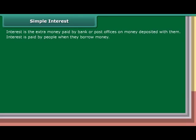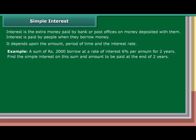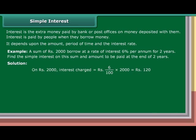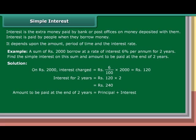Simple Interest: Interest is the extra money paid by banks or post offices on money deposited with them, and is also paid by people when they borrow money. It depends on the amount, period of time, and the interest rate. Example: A sum of Rs. 2,000 is borrowed at 6% per annum for 2 years. SI for 1 year = 6/100 × Rs. 2,000 = Rs. 120. Interest for 2 years = Rs. 120 × 2 = Rs. 240. Amount to be paid = Rs. 2,000 + Rs. 240 = Rs. 2,240.